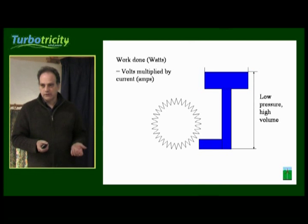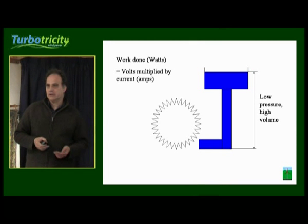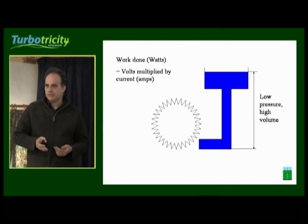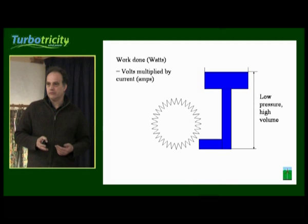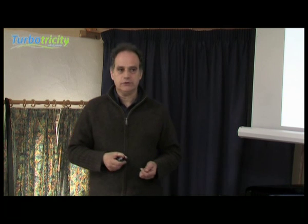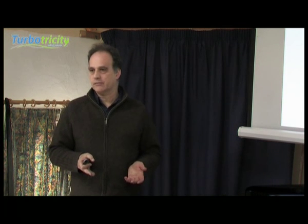And the work done, measured in watts, is the volts multiplied by the current in amps — so volts multiplied by amps is watts. One kilowatt could be a thousand volts at one amp, or it could be one volt at a thousand amps, or anything in between. Usually it's 240 volts at four amps.